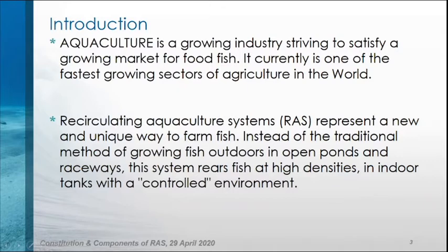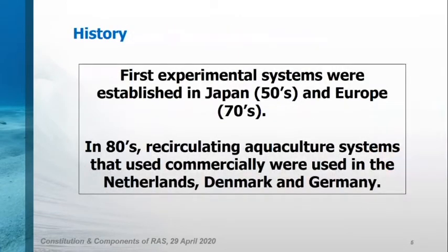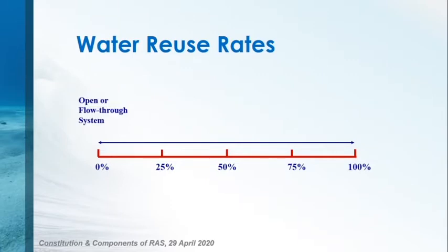Recirculating aquaculture systems represent a new and unique way to farm fish, instead of the traditional method of growing fish outdoors in open ponds and raceways. This system rears fish at high densities in indoor tanks in controlled environments. RAS is used all over the world for fish production where water exchange is limited or with the aim of water saving. RAS dramatically reduces the amount of water used in aquaculture and space required for mass production. The first experimental systems were established in Japan and Europe in the 80s, and commercial systems were first used in the Netherlands, Denmark and Germany. Water reuse rates can be raised up to 90 or 95 percent in recirculating aquaculture systems.